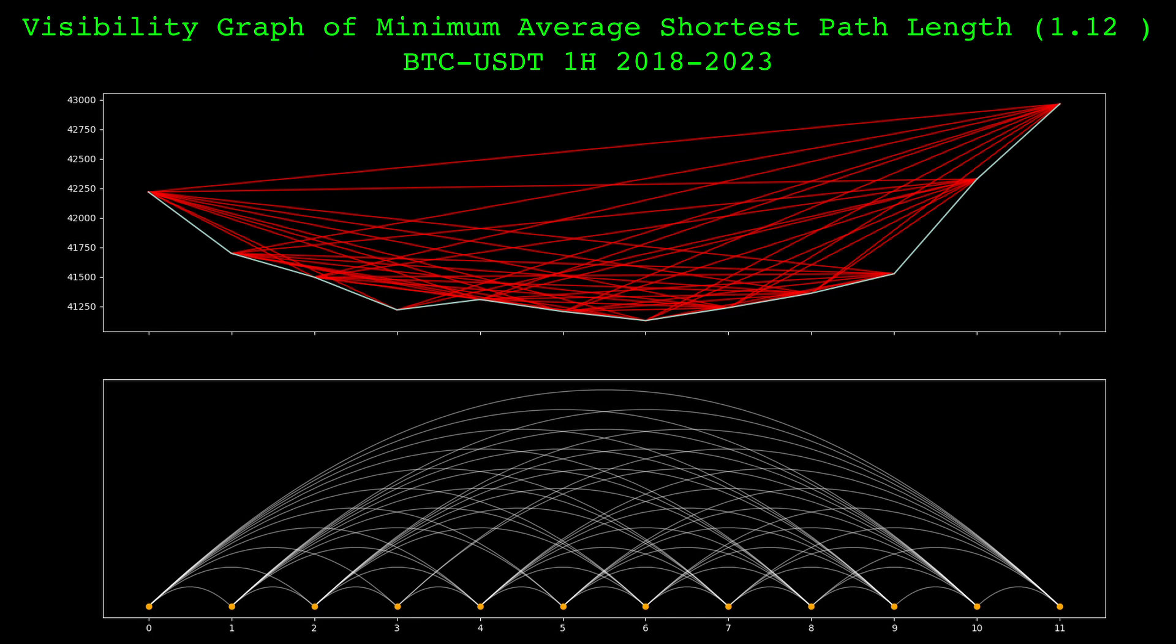Here's the visibility graph that produced the minimum average shortest path length. It is 1.12. The price made the opposite shape here. On the graph, nearly every node is connected.